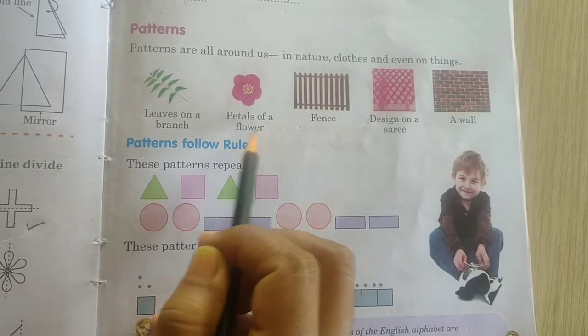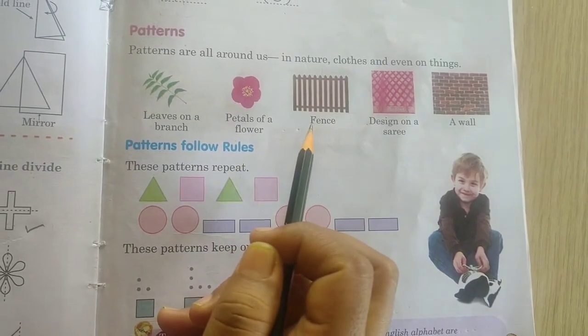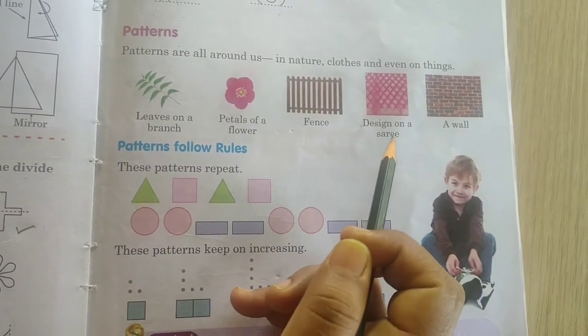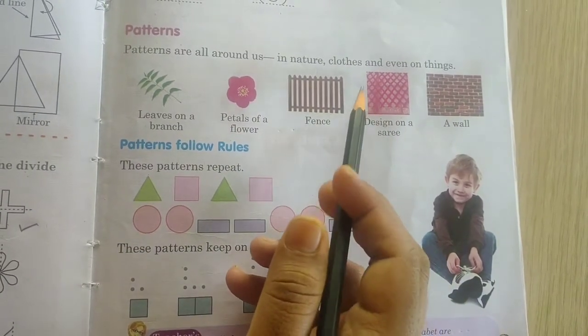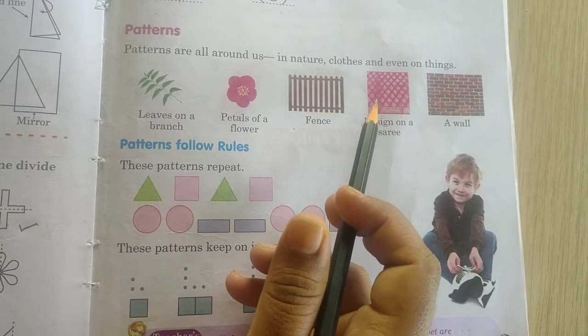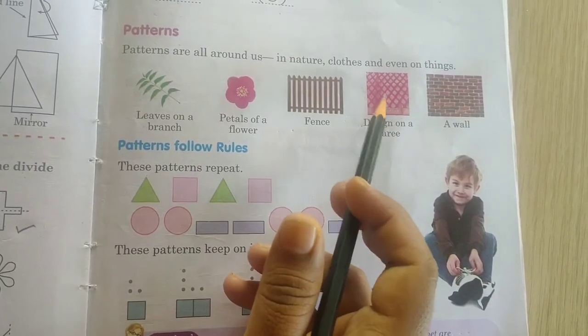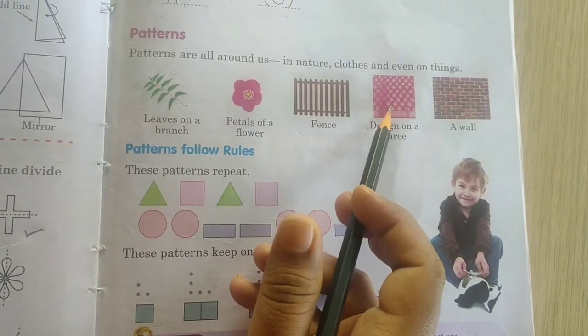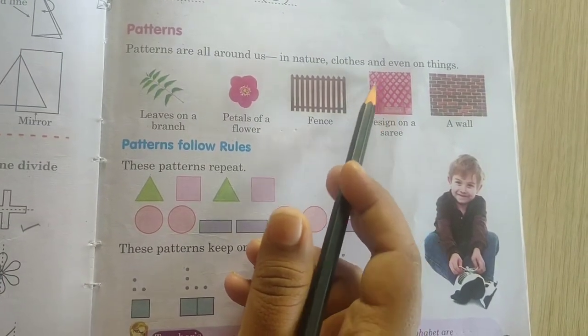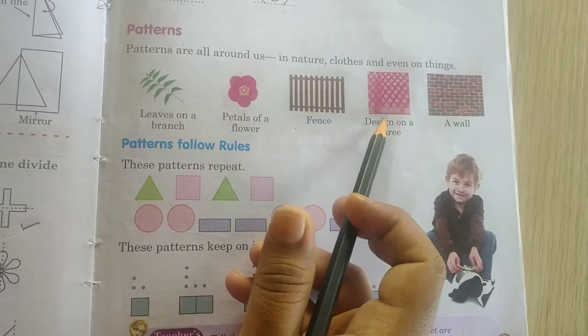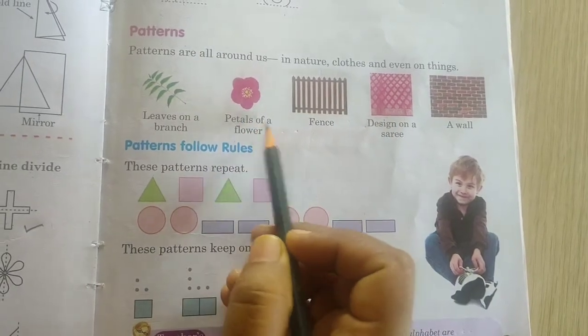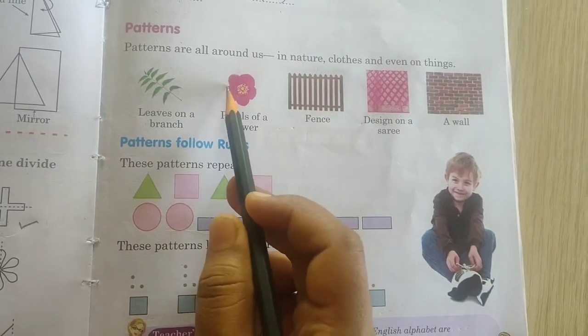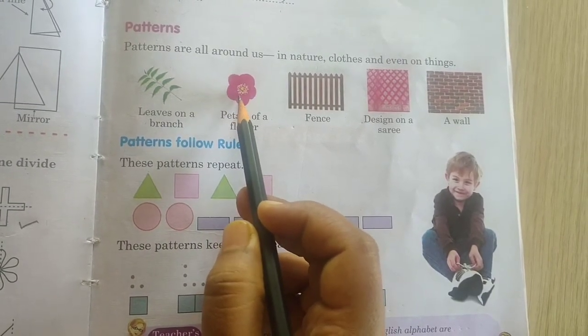Petals of a flower, and fence. And on the clothes, like a design on the sarees, these are the patterns. Similar, same patterns are repeating. The same design is getting repeated all over the cloth on the saree. See the petals here. Each and every petals are repeating. This we call it as pattern.